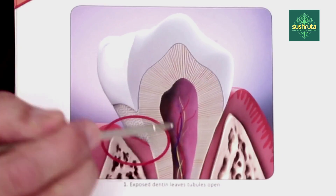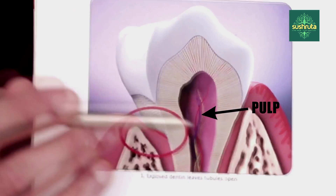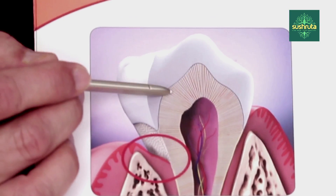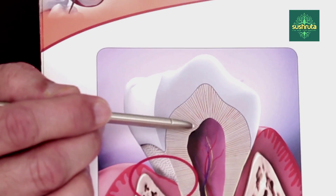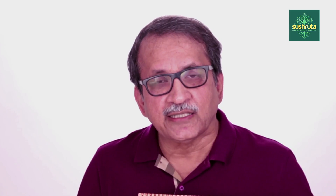So if enamel is not there and dentine is exposed, then you get that sensation with cold. Then there is the heart of the tooth, which is the pulp. If the sensation goes towards the pulp, then you get pain with heat — that is called pulpitis, that is called inflammation in the pulp.